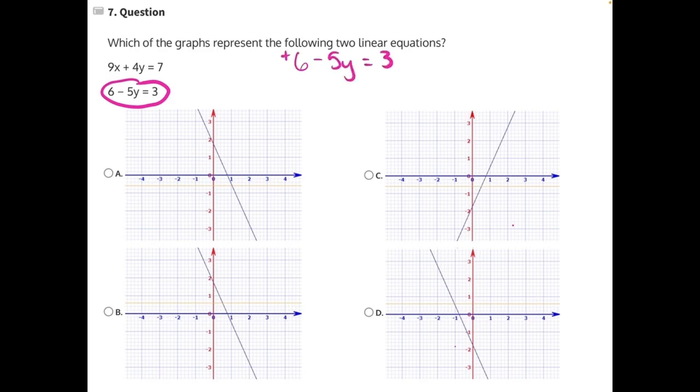6 is positive, so to do the opposite, we need to subtract it from both sides, leaving us with negative 5y equals 3 minus 6, which would be negative 3.